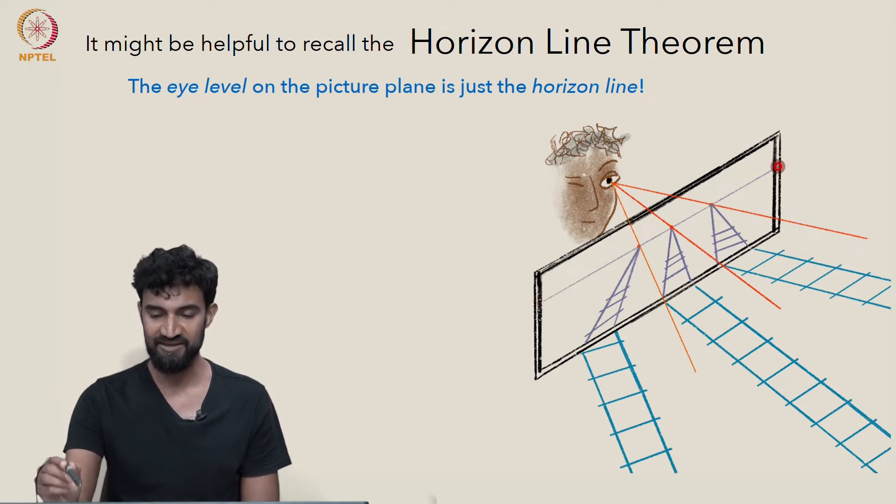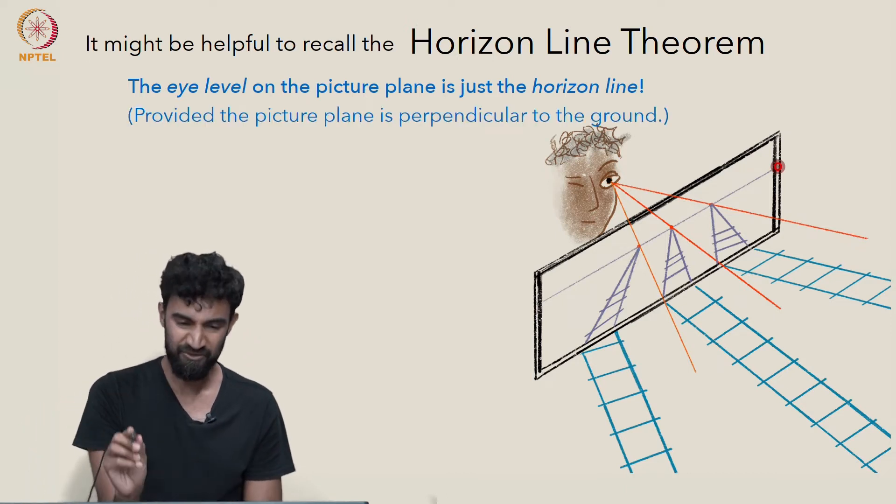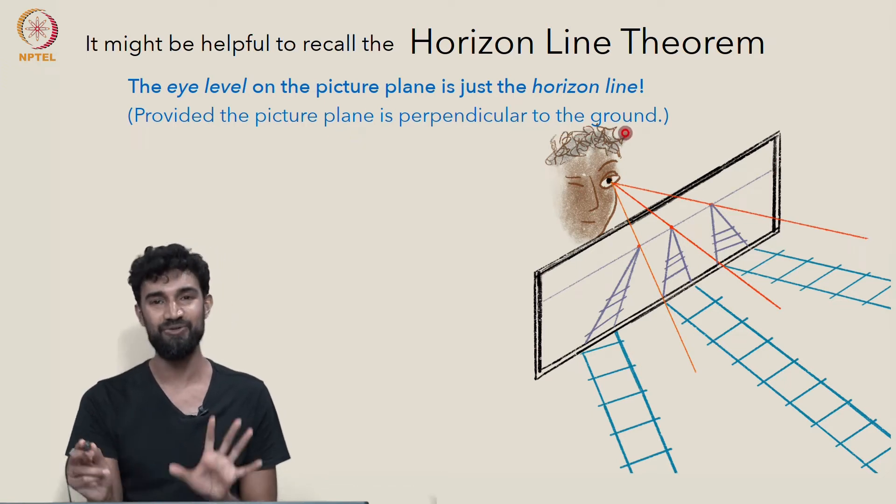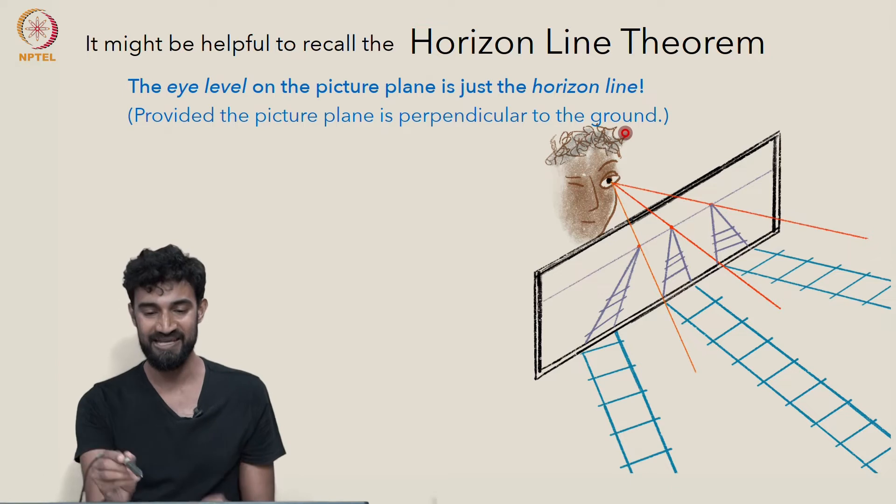The horizon line gives us exactly that eye level of the viewer, provided that the picture plane is perpendicular to the ground. If it's angled back or angled down, then things get a little more complicated.